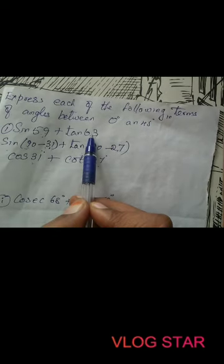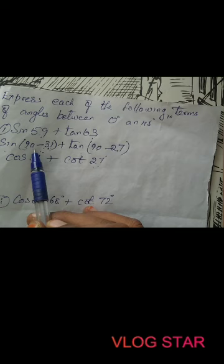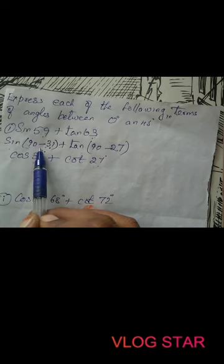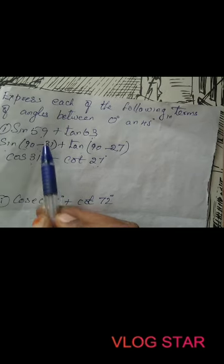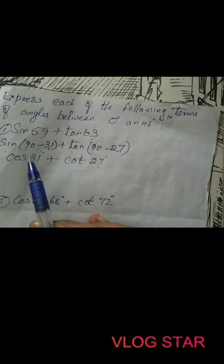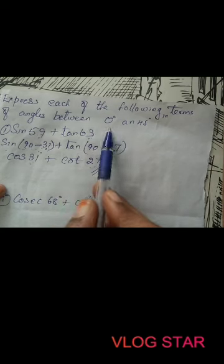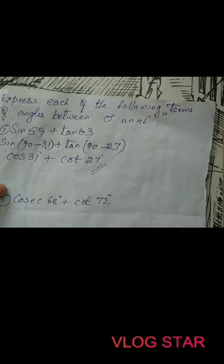Whatever angle is given greater than 45°, we write it as 90° minus a smaller angle, apply the complementary formula, and express the result with angles between 0° and 45°.